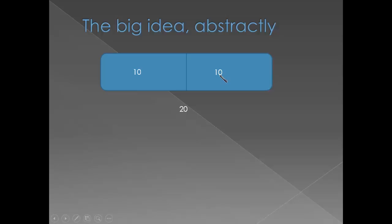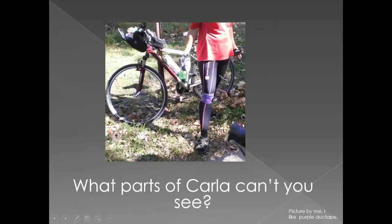Let's spend some time on this idea. Look at this picture of my bicycling buddy Carla. What parts of Carla can't you see? Why do you say her head and neck are there even though you can't see them?